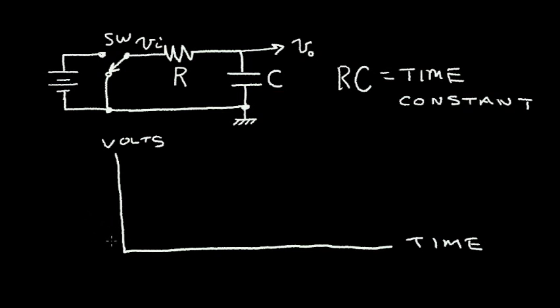So initially, before I throw the switch, the V in or the VI is at zero. Let me change colors. So initially, V in is at zero, I throw the switch and V in changes abruptly to the battery voltage. And it remains at the battery voltage continuously. Let's examine what happens to the output voltage, VO.